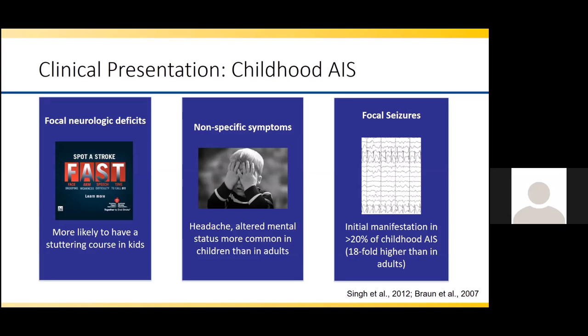One important difference is that children are more likely to have a stuttering course at the onset of their symptoms. As opposed to an adult, in which deficits are often maximal at onset, a child's course can wax and wane early on in the stroke process. Nonspecific symptoms such as headache and altered mental status are more common in children compared with adults — things that in an adult may lead us away from a diagnosis of stroke, but in a child are very consistent with an acute stroke.